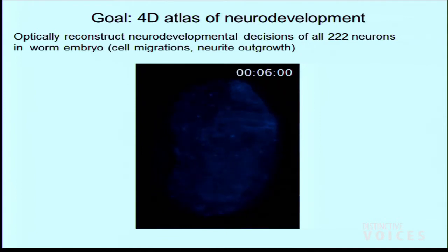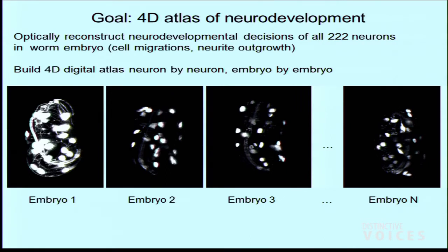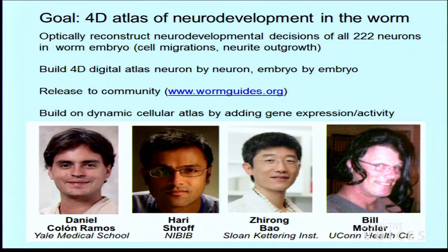Because this worm is very stereotyped, you can look at thousands of animals, image different subsets of neurons in each animal, and then fuse all the data together in a digital atlas — much like Google Maps, except in three dimensions and across time. Knowing where the cells are and where the outgrowths are is really just the beginning. This is the resource we imagine — at wormguides.org you can download an app for your desktop or phone and track our progress.